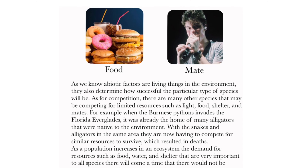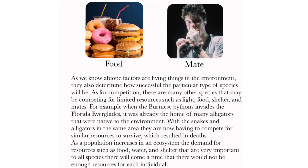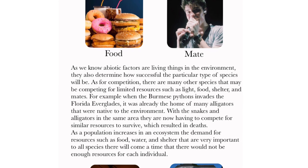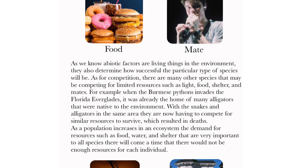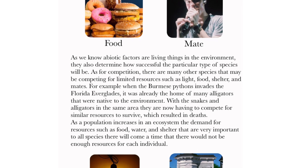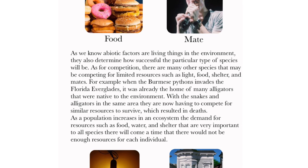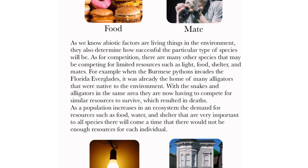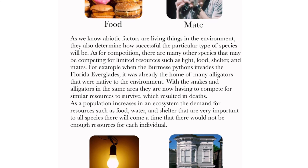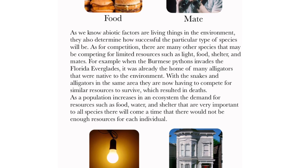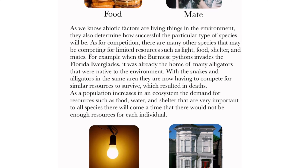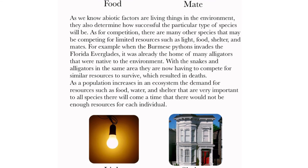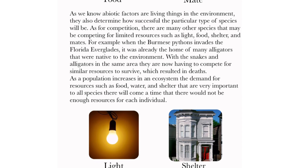Abiotic factors also determine how successful a particular type of species will be. As for competition, there are many other species that may be competing for limited resources, such as light, food, shelter, and mates. For example, when the Burmese python invades the Florida Everglades, it was already the home of many alligators native to the environment. With the snakes and alligators in the same area, they are now having to compete for similar resources to survive, which resulted in deaths. As the population increases in an ecosystem, the demand for resources such as food, water, and shelter will eventually exceed what is available for each individual.